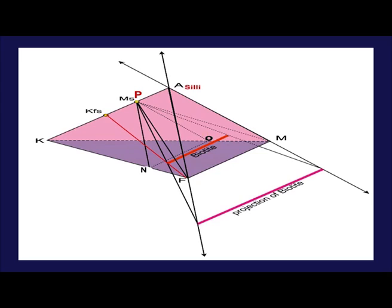In the ACF and AKF diagram, FeO and MgO plus MnO are grouped as one component. This simplification makes it possible to represent many observed mineral assemblages, but certainly not all of them.